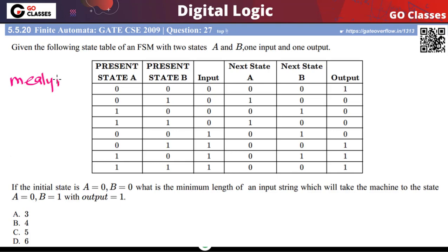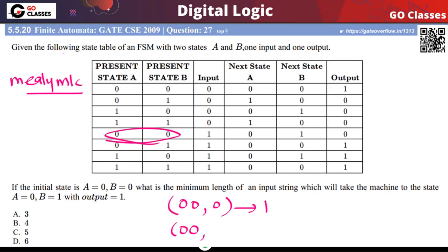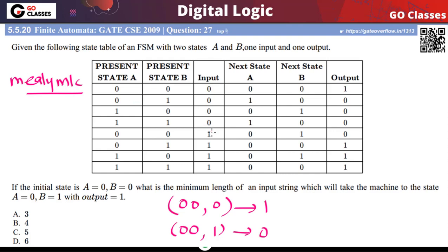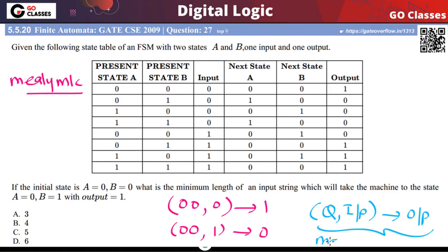This is a Mealy machine because the output depends on both the present state and the input. For example, if your present state is 0,0 and the input is 0, then the output is 1. Similarly, if your present state is 0,0 and the input is 1, then the output is 0. So the output depends on the present state and the input — this is the definition of a Mealy machine.